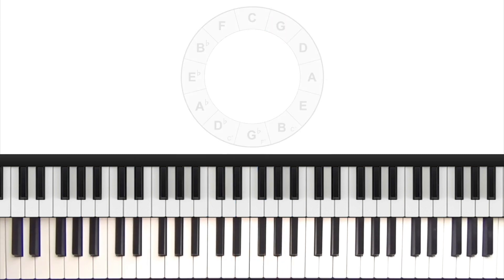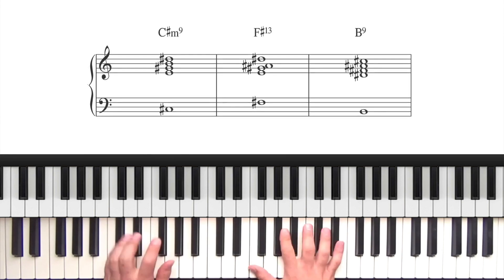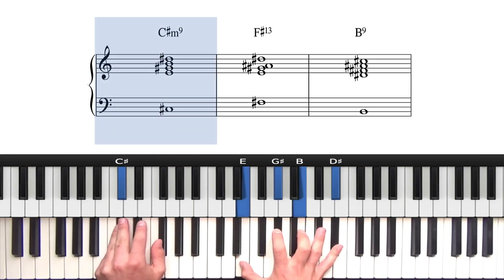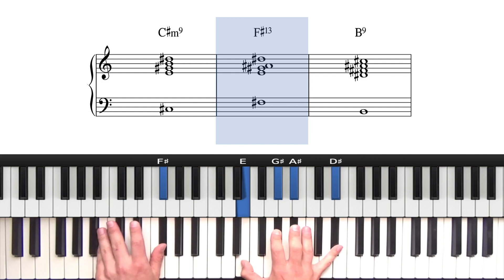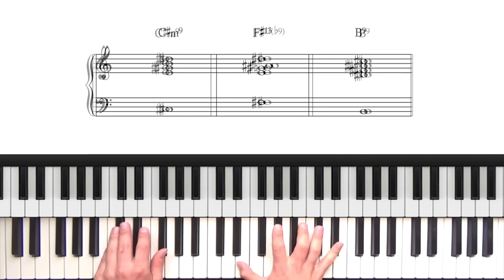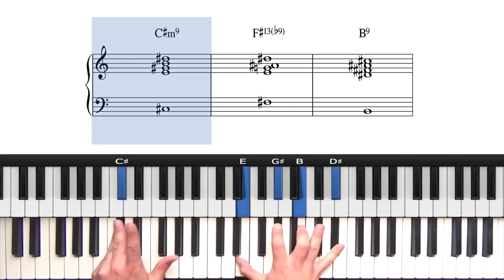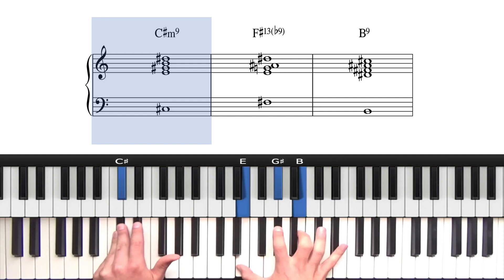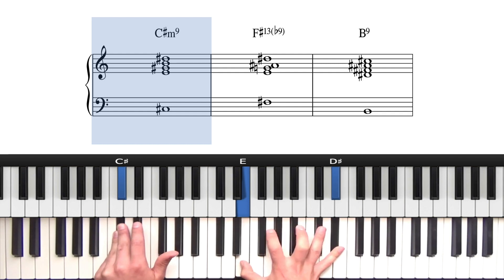An important point here is to consciously identify where the flat 9 is. So let's take one of the more difficult keys. How about the 2-5-1 in B major? We have C sharp minor 9, F sharp 13 flat 9 to B major. So when I'm working out the flat 9 over this, I'd start on the 2 chord and I'm thinking in terms of the scale degrees. So root, flat 3, 5, flat 7, 9. And then we know that those middle 2 notes are going to drop down.